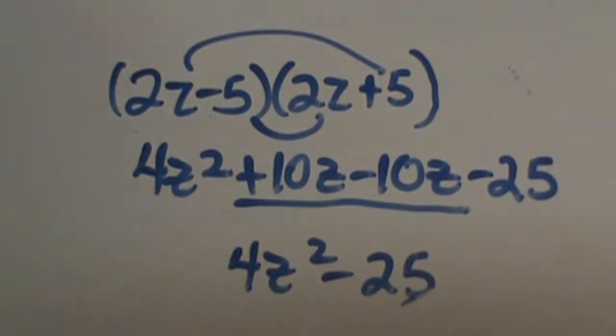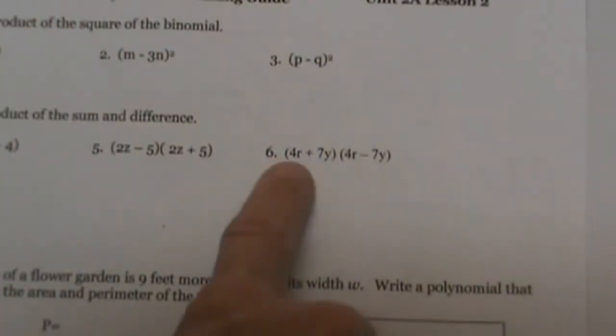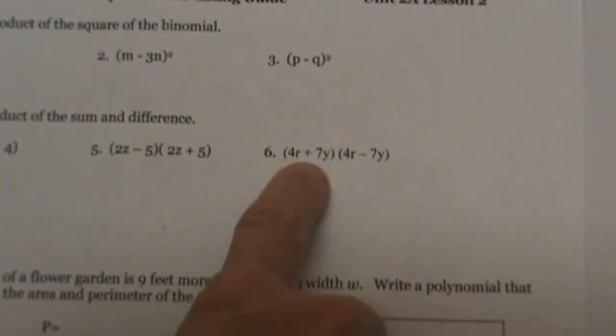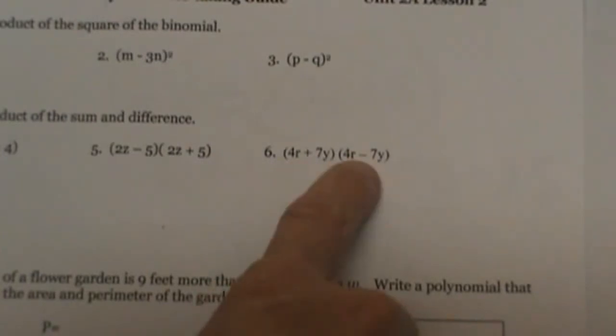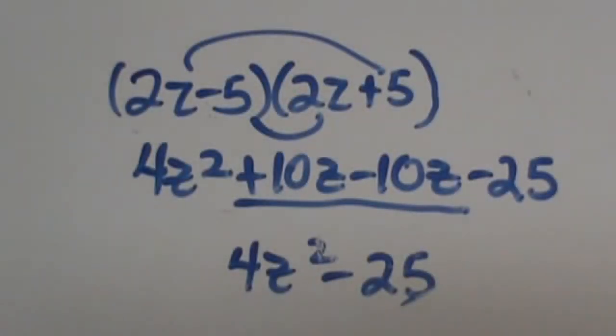We are going to bring down a 4z squared and a minus 25, and that is the special product of the difference of two squares. So now I want you to look at number 6: 4r plus 7y times 4r minus 7y. Try that one and see what you get. You can pause the video or you can keep watching — I am just going to write up the answer and see if you can get it.